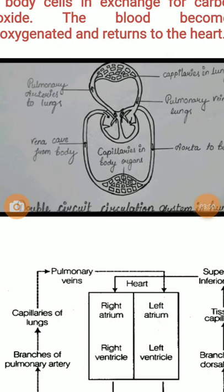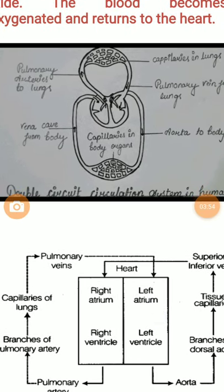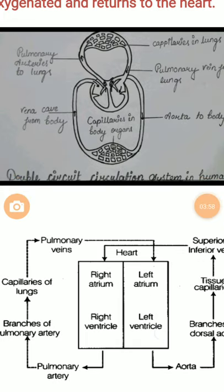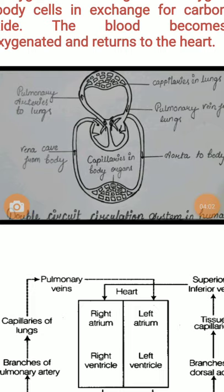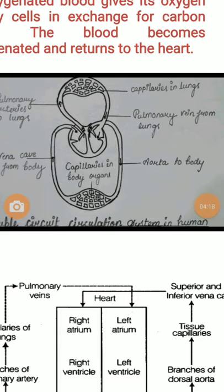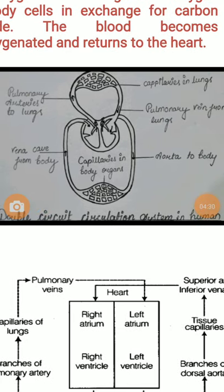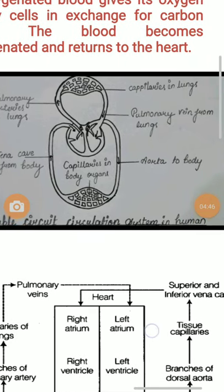Looking at this diagram, you can see that used blood enters the right auricle from the body via the vena cava. From the right auricle it enters the right ventricle — here the tricuspid valve opens. From the right ventricle, blood travels through the pulmonary artery to the lungs, and from the lungs it returns to the left auricle. The pathway from the right ventricle to the left auricle is known as pulmonary circulation.